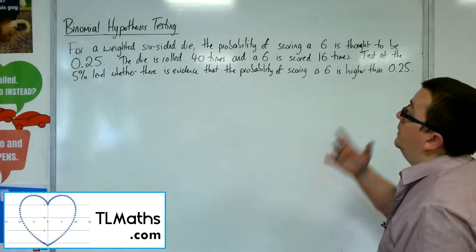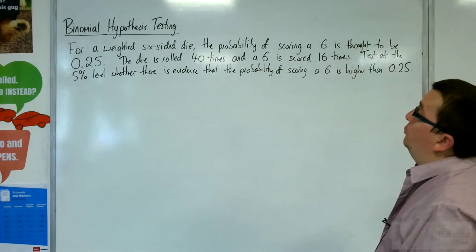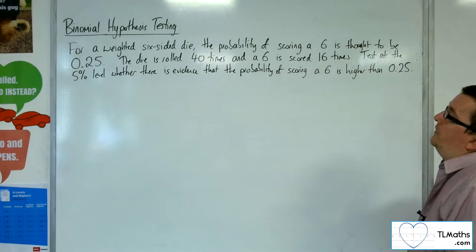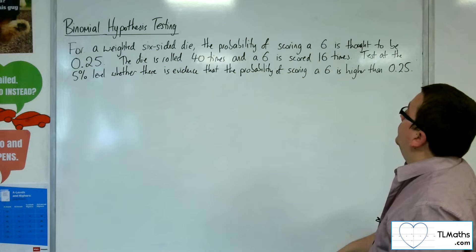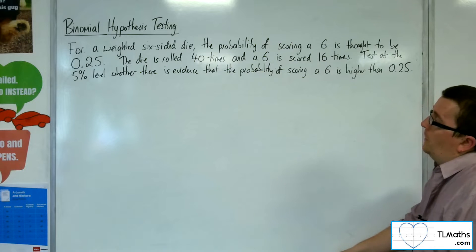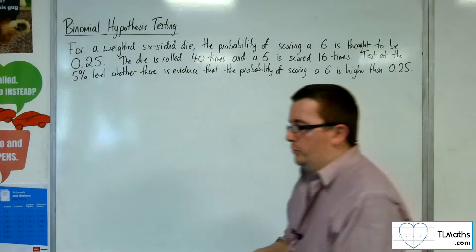For a weighted six-sided die, the probability of scoring a six is thought to be 0.25. The die is rolled 40 times, and a six is scored 16 times. Test at the 5% level whether there is evidence that the probability of scoring a six is higher than 0.25.